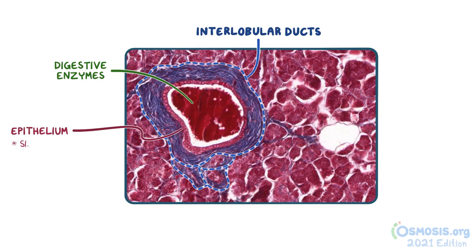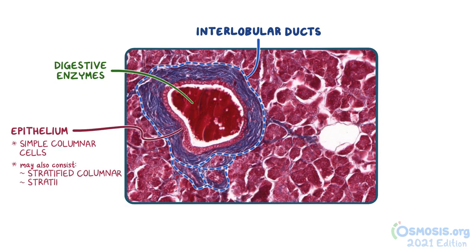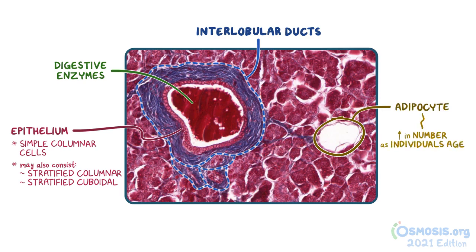The epithelium consists of simple columnar cells in this image, but some ducts might also consist of stratified columnar or stratified cuboidal epithelium instead. To the right of the interlobular ducts is the adipocyte. The adipocytes actually increase in number within the pancreas as individuals age, which is a normal finding caused by pancreatic atrophy over time.